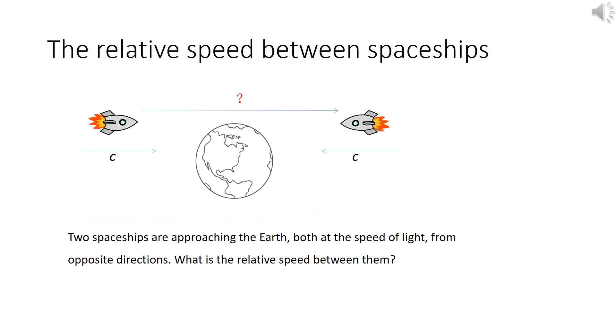Let's consider this problem. Suppose two spaceships are approaching the earth from opposite directions, both at the speed of light. What is the relative speed between them?